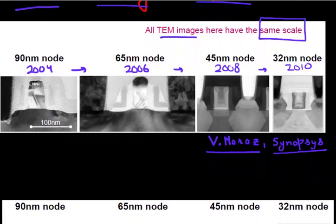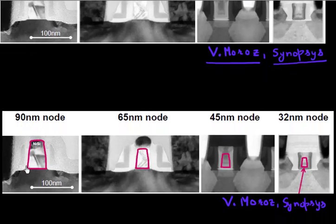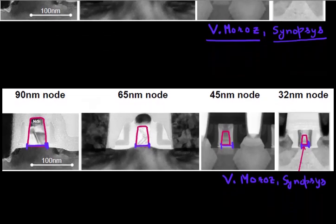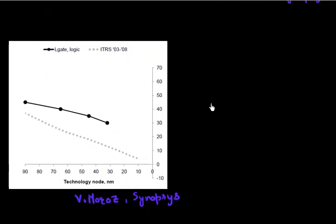And then what Victor did was, very painstakingly, he measured the physical gate length. So what Victor did was he measured the physical gate length, that is the length of the gate from the gate line from 90 nanometer to 65 to 45 to all the way to 32 nanometer. And what he came up with was actually quite surprising.